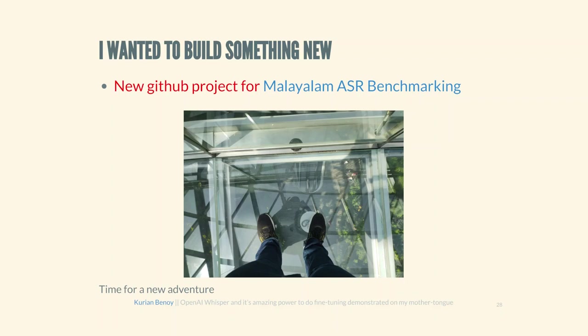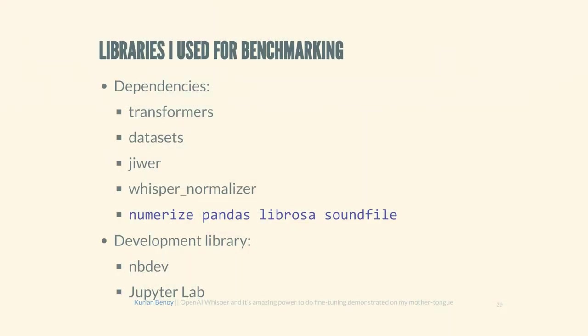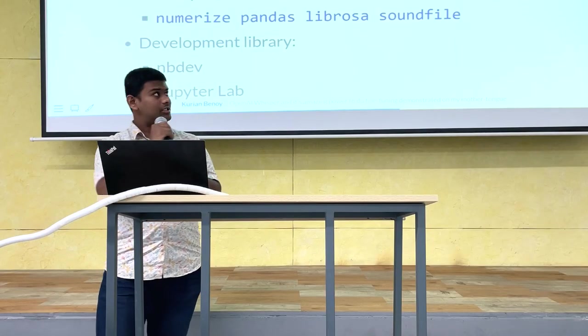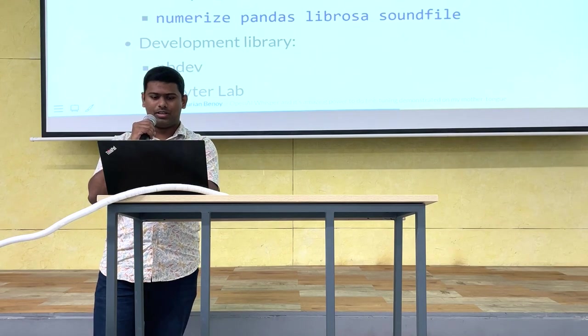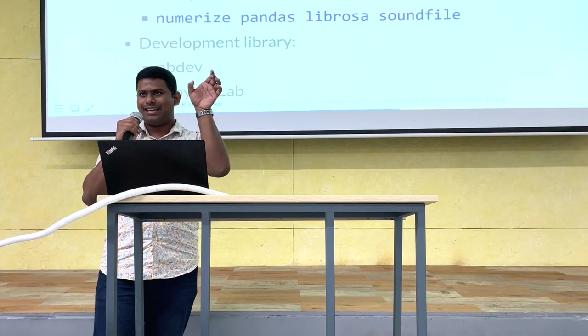A bit about the code. I used Hugging Face's Transformers library and Datasets library. Jiwer was used for calculating WER. I also used a normalizer library for standardizing text, which is important for ASR evaluation. All development was done using Jupyter Labs. For the evaluation function, I loaded the dataset using the Hugging Face datasets load_dataset function, then did some preprocessing and normalization.